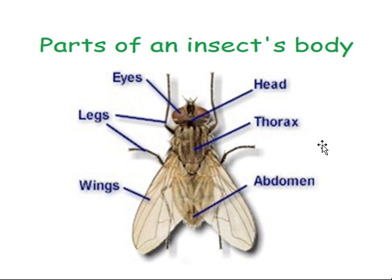So there are three main parts of an insect's body: its head, thorax, and its abdomen.